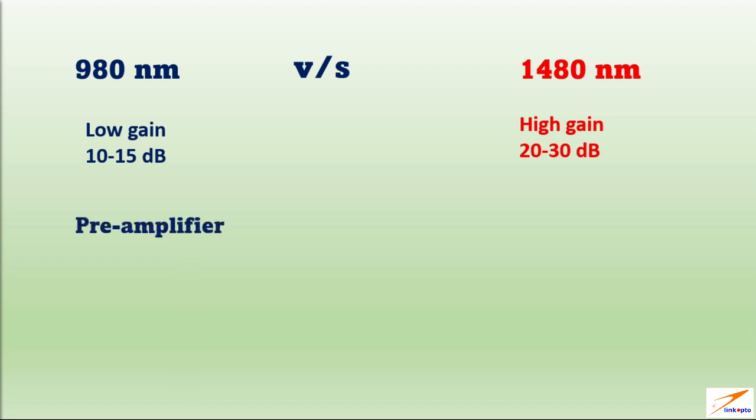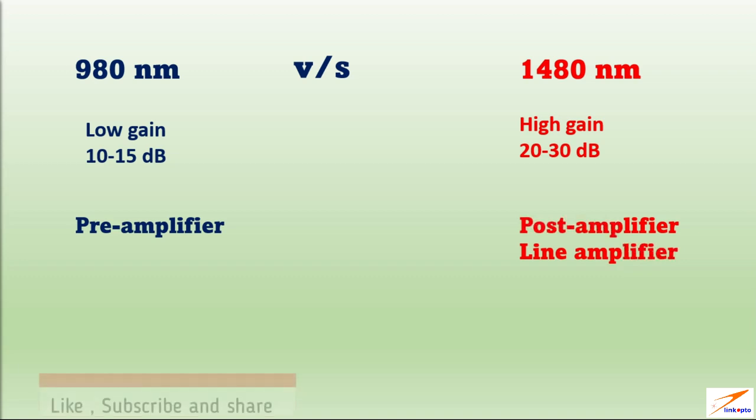980 nanometers amplifier preferred to use as pre-amplifier. 1480 nanometers amplifier preferred to use as post-amplifier and line amplifier. Post-amplifier means near to transmitter and line amplifier means mid-amplifier site.